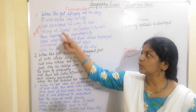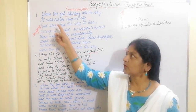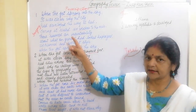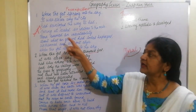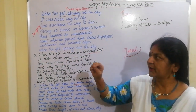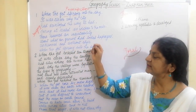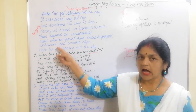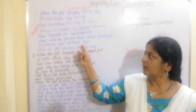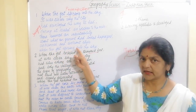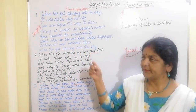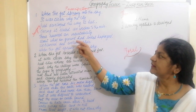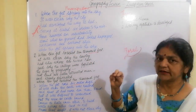Now I begin with the first stanza. The lines are: 'When the jet sprang into the sky, it was clear why the city had developed the way it had. Seeing it scaled six inches to the mile, there seemed an inevitability about what on ground had looked haphazard, unplanned and without style, when the jet sprang into the sky.' Word meanings: sprang means rise; inevitable means unavoidable; haphazard means without plan or order.